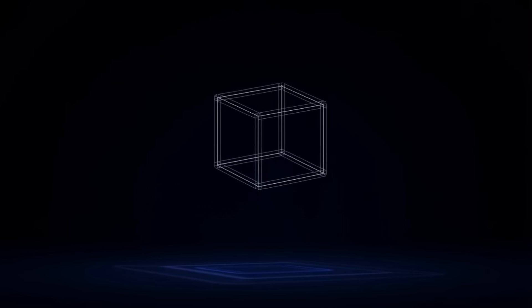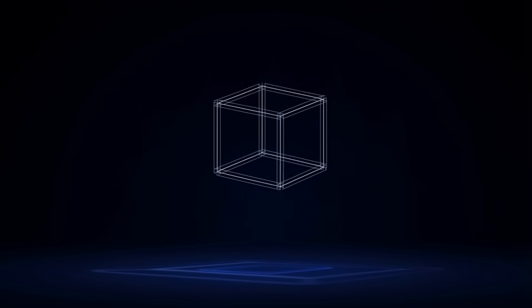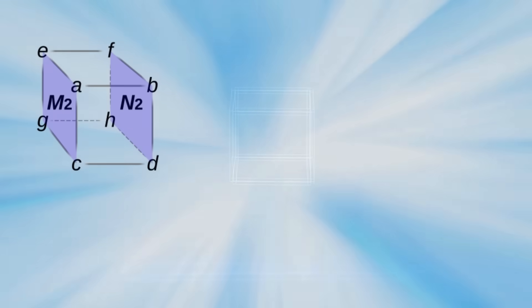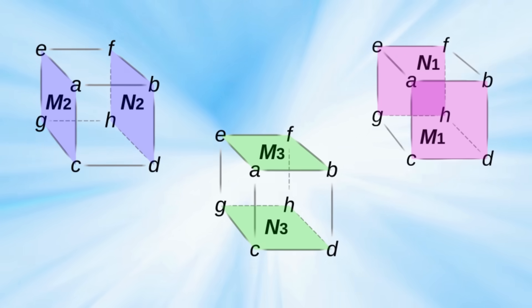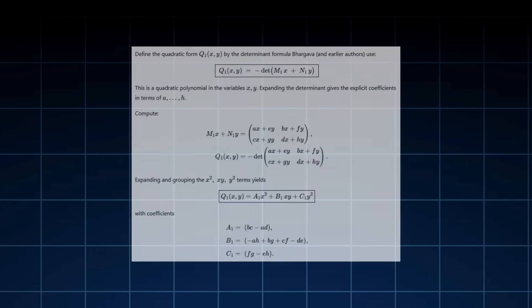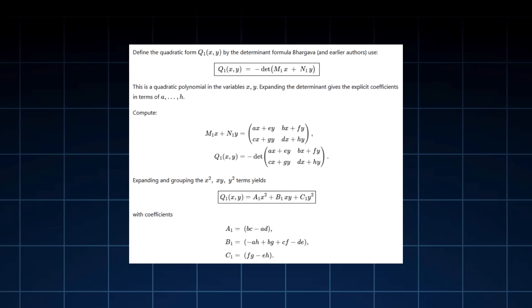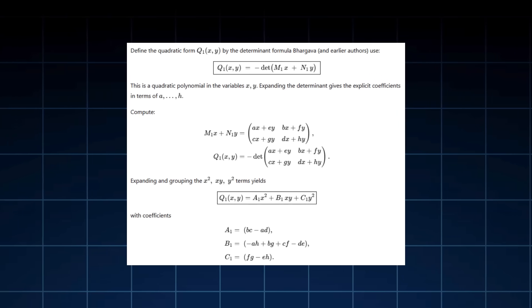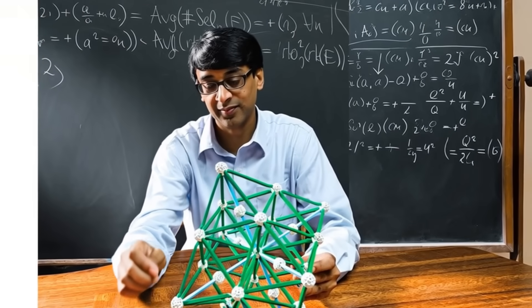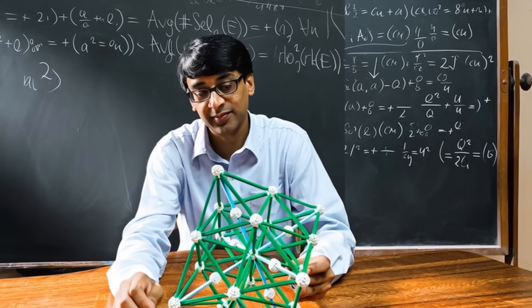The cube itself became iconic, an object that blended geometry, symmetry, and algebra into a single conceptual engine. By slicing the cube in different directions, Bhargava recovered entire families of algebraic forms. By labeling its vertices, he uncovered new relationships between quadratic and higher degree forms. It was as if he had reached into the structure of numbers themselves and found a hidden user interface.